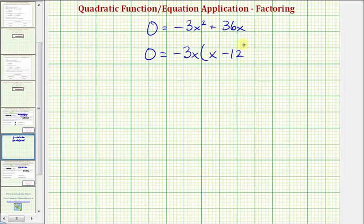Notice that -3x times -12 does give us positive 36x. So now this product equals zero when -3x = 0 or when the factor of x - 12 = 0. So here we would divide both sides by -3. Of course, zero divided by -3 is zero, so x = 0.